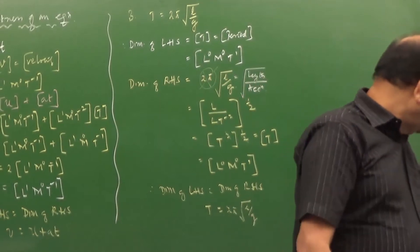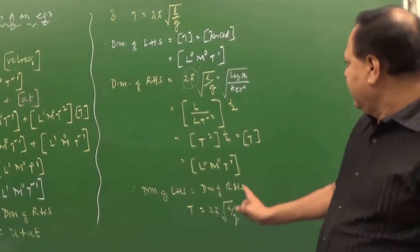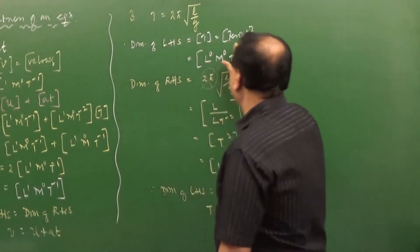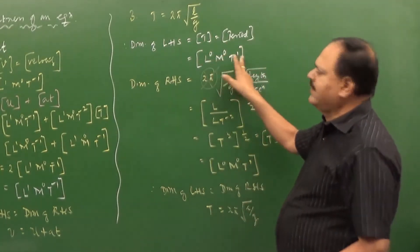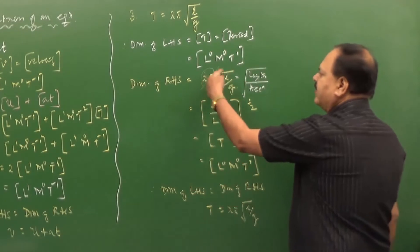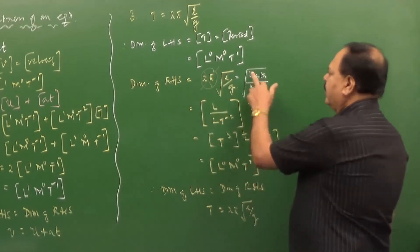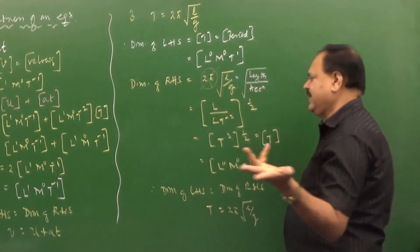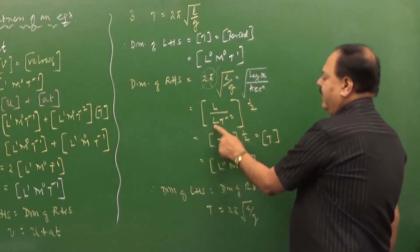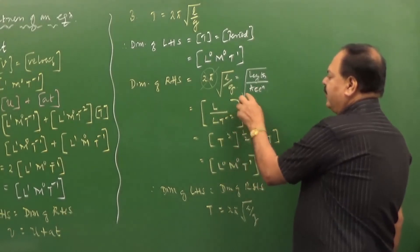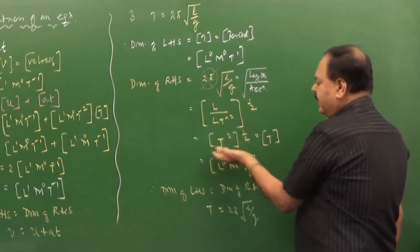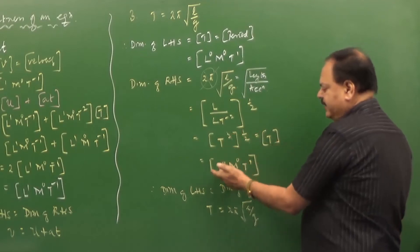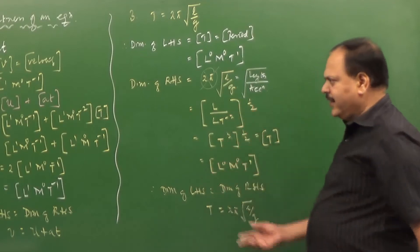This equation is dimensionally correct. To summarize: first write the dimension of LHS — T is period, L⁰M⁰T¹. Then write the dimension of RHS — 2π is a constant, take length divided by acceleration due to gravity, apply power of half, T comes to the numerator with power plus 2 times half equals 1. So L⁰M⁰T¹, and therefore the equation is dimensionally correct.